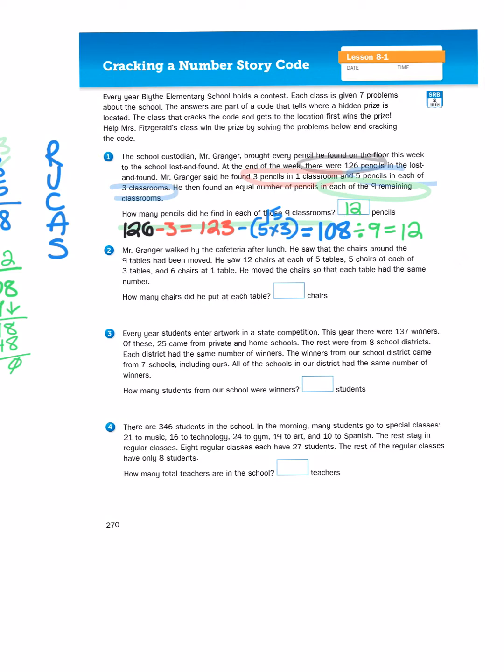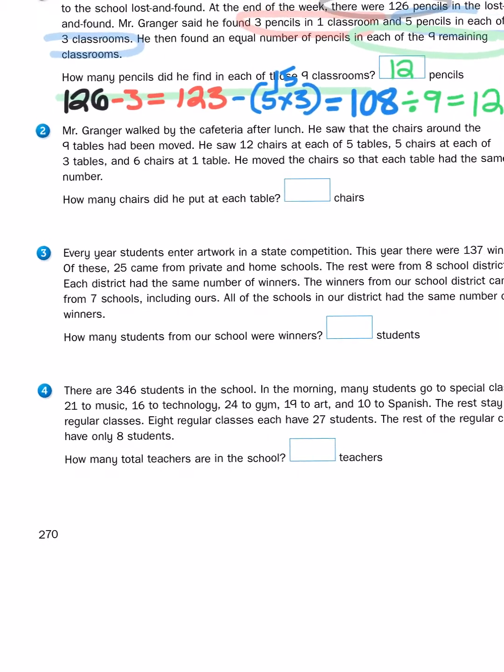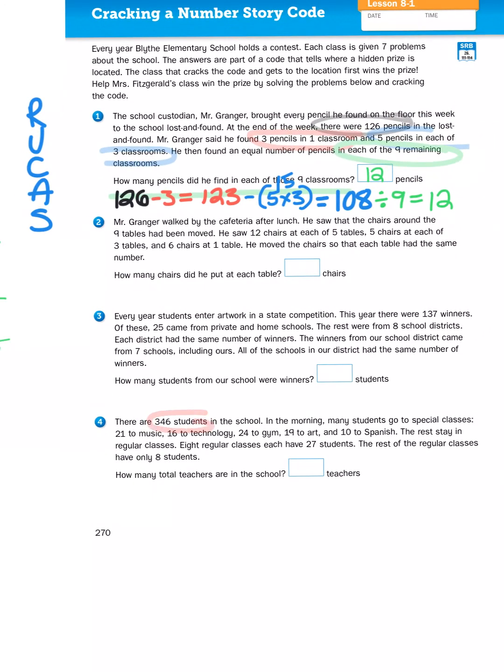I'm going to skip down to problem number four. As I read the problem, I'm going to be circling important information and underlining the question. There are 346 students in the school. In the morning, many students go to special classes: 21 to music, 16 to technology, 24 to the gym, 19 to art, and 10 to Spanish. The rest stay in regular classes. Eight regular classes each have 27 students. The rest of the regular classes have only eight students. How many total teachers are in the school?